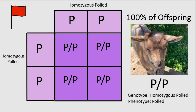The sixth and final pairing is a homozygous polled goat bred to a homozygous polled goat. Again, this pairing is also a huge red flag and may have the highest chance of producing intersex offspring compared to the others, but will result in 100% homozygous polled offspring with a genotype of capital P slash capital P.